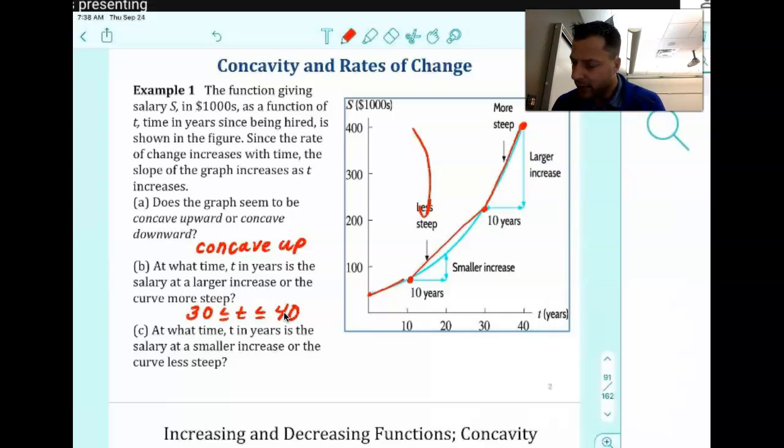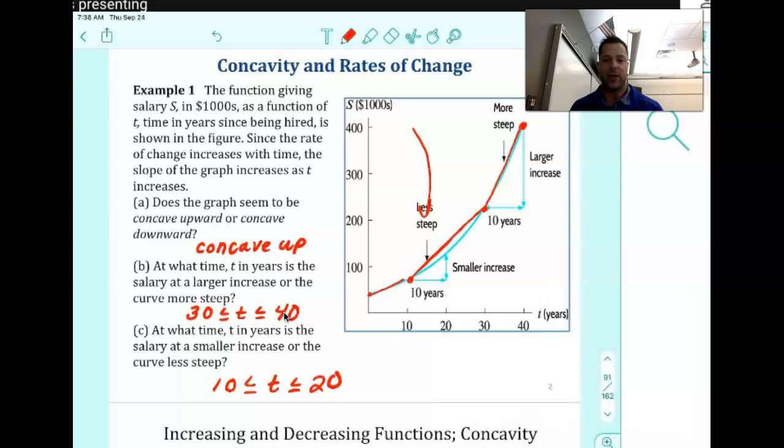And when it has the smallest increase, if we look down here from the bottom, we could look at probably 0 to 10 years, but it doesn't have data. So we're looking at 10 to probably 20 years at a smaller increase or curve less steep. The curve is less steep. It's not asking for the smallest, it's a smaller increase. So there's multiple options here, but we could do from 10 years to 20 years. We just needed a smaller increase than this more steep portion here.